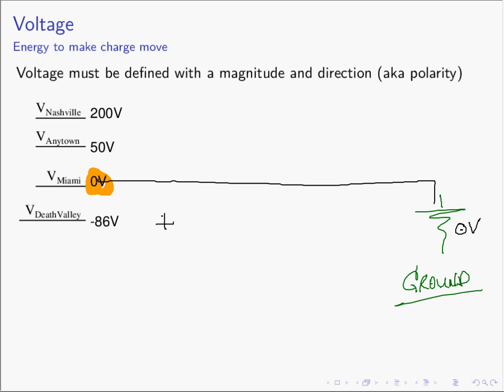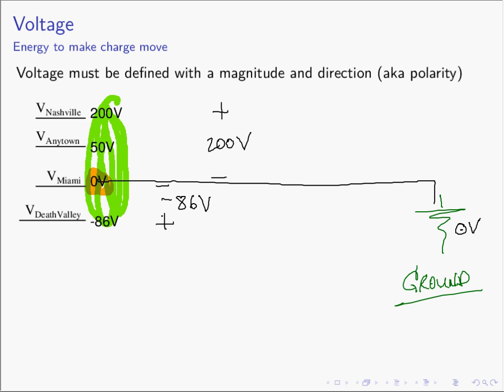Death Valley is negative 86 volts above ground, and Nashville is 200 volts above ground. So these voltages are all with respect to ground. We can measure voltages that way, but most of the time — probably in excess of 85 to 90% of the time — when we're talking about voltages in electrical circuits, we do not measure them with respect to ground. We measure them with respect to other voltages in the circuit.